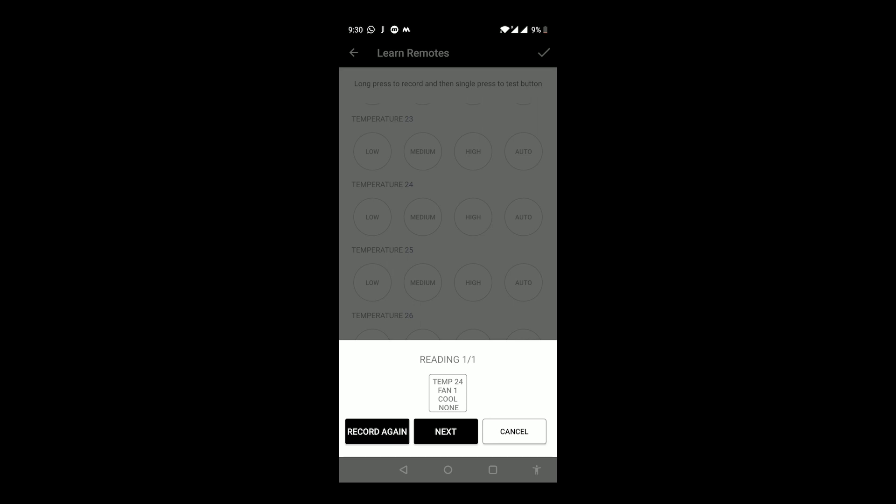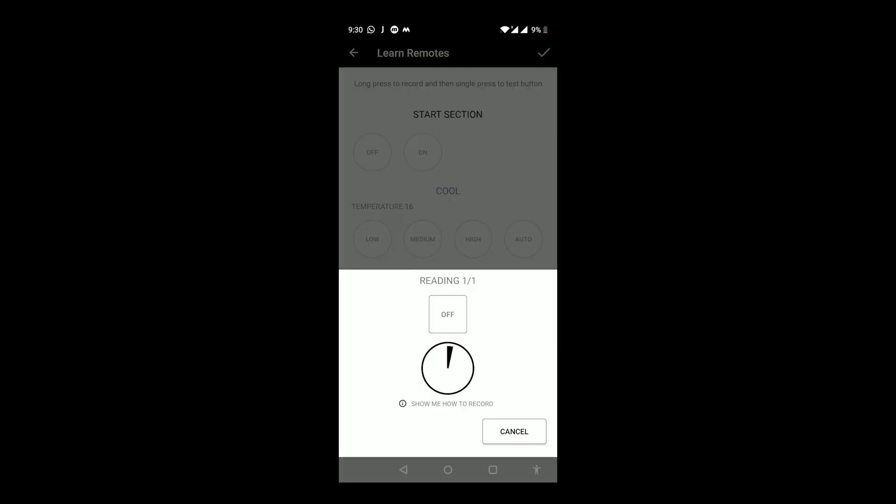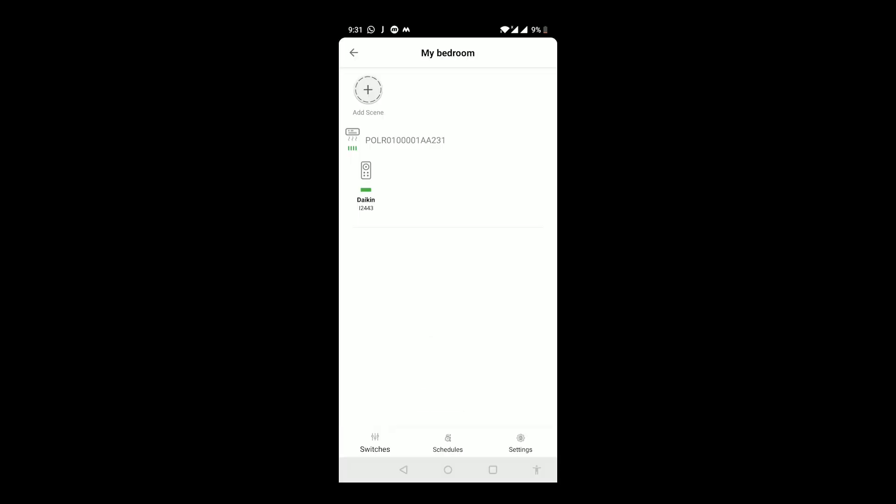The pop-up will now change to this screen and you can press the next button. You can also add an extra button if you need. After you are done learning all the buttons, hit save and your remote will be saved.